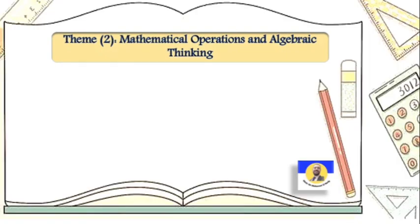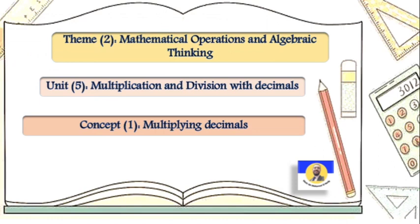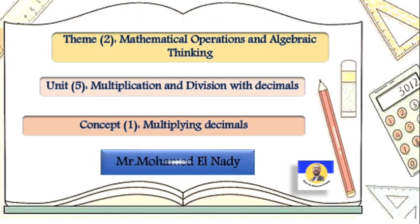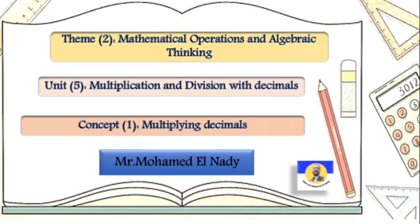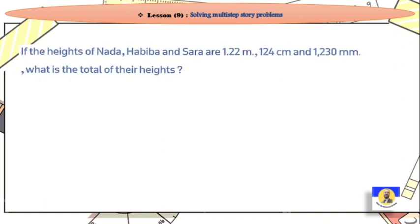As-salamu alaykum, Primary 5 students. This is Mr. Muhammad ibn Ali. Today inshallah I will complete Theme 2, Mathematical Operations and Algebraic Thinking, Unit 5, Multiplication and Division with Decimal, Concept 2.1: Multiplying Decimals. Lesson 9: Solving Multistep Story Problems.